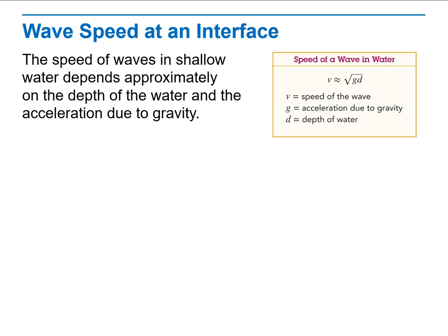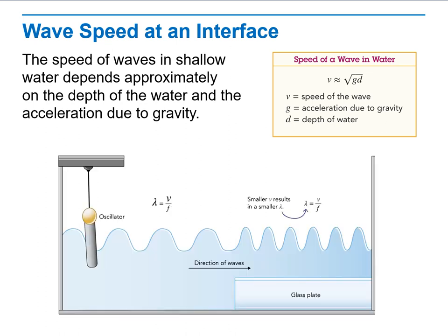So, v is approximately equals to g, which is the acceleration due to gravity and the depth of water multiplied by each other and the square root of that. We'll discuss that in details later in our lesson.